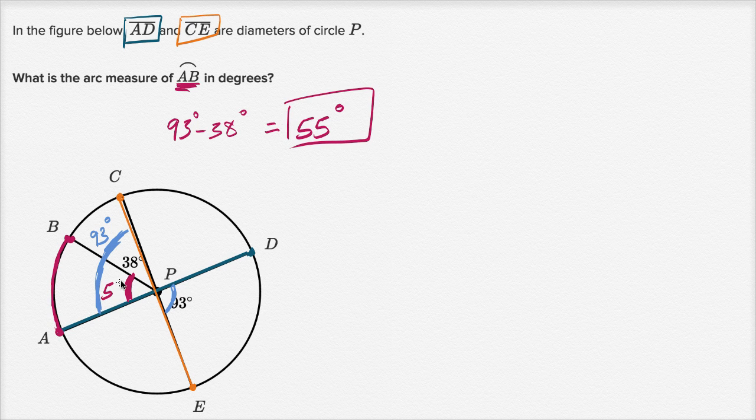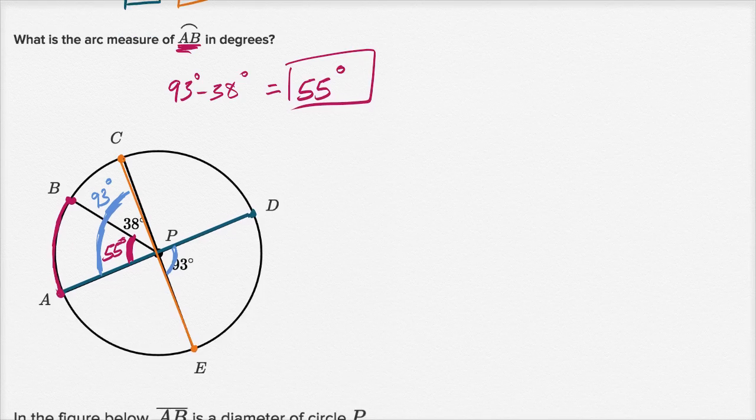This angle right over here is 55 degrees. If you were to add this angle measure plus 38 degrees, you'd get 93 degrees, and that has the same measure because it's vertical with this angle right over here, with angle DPE. All right, let's do one more of these.